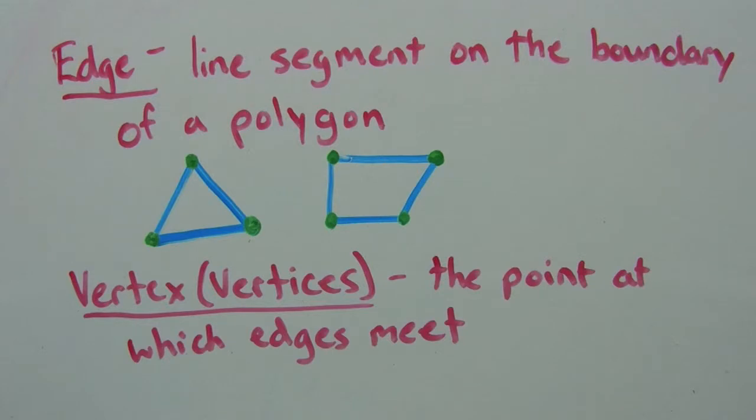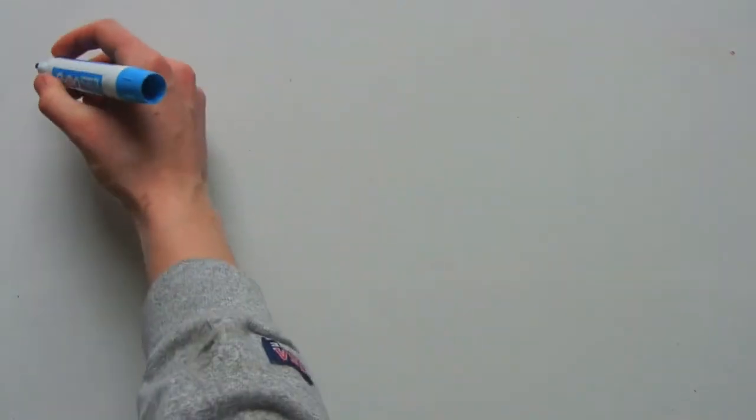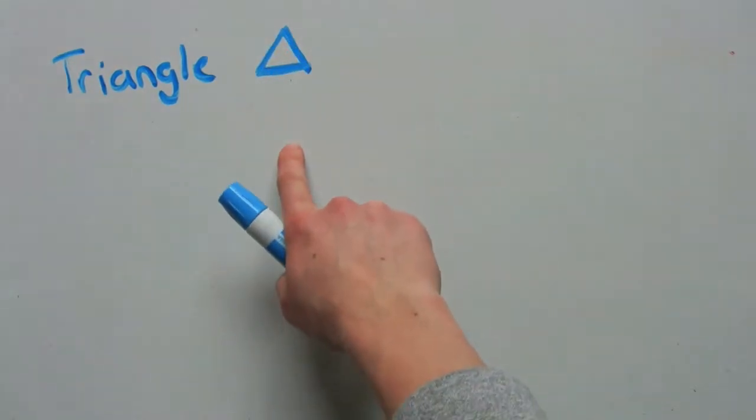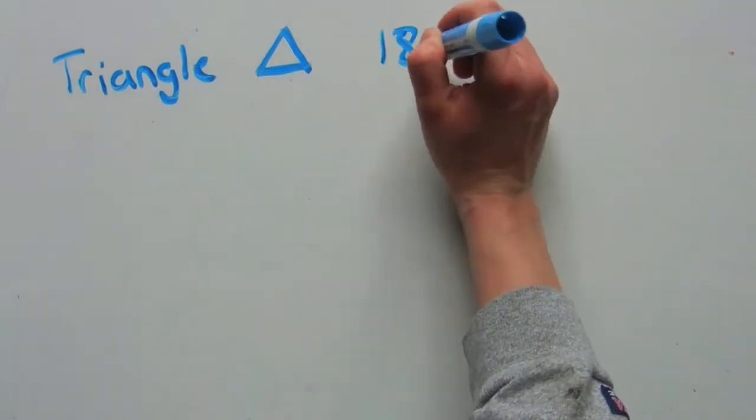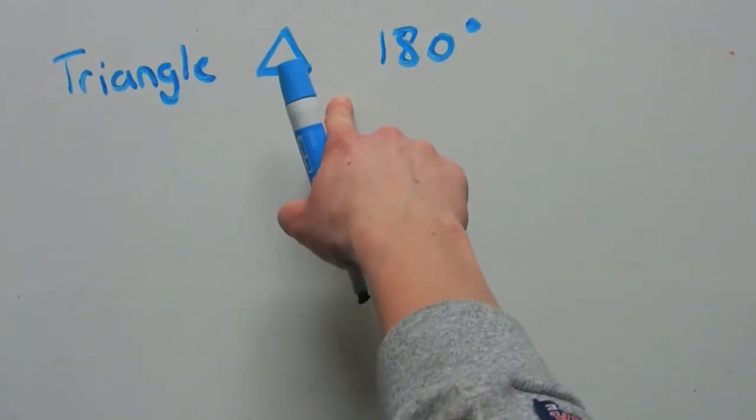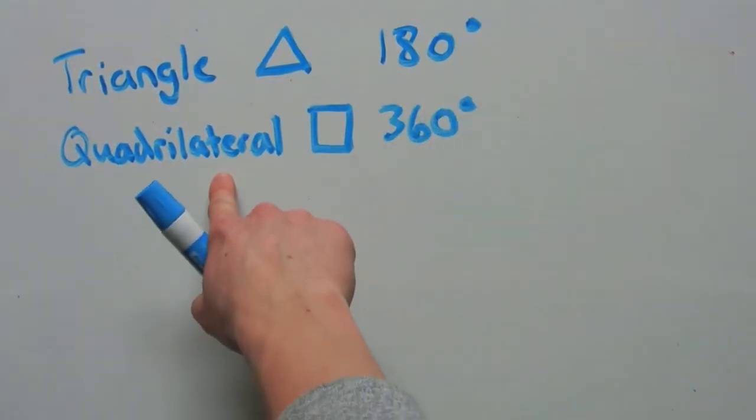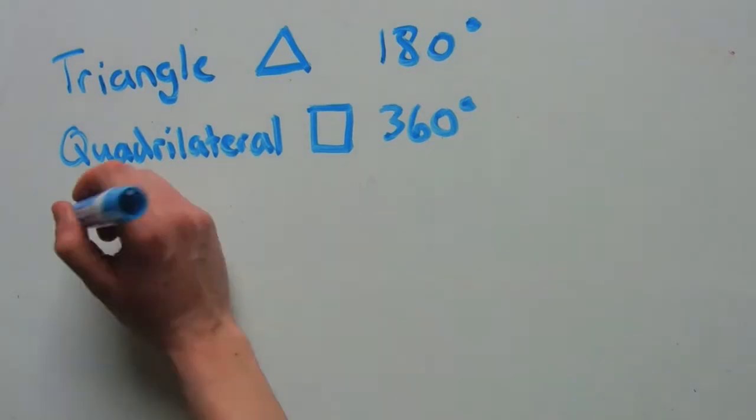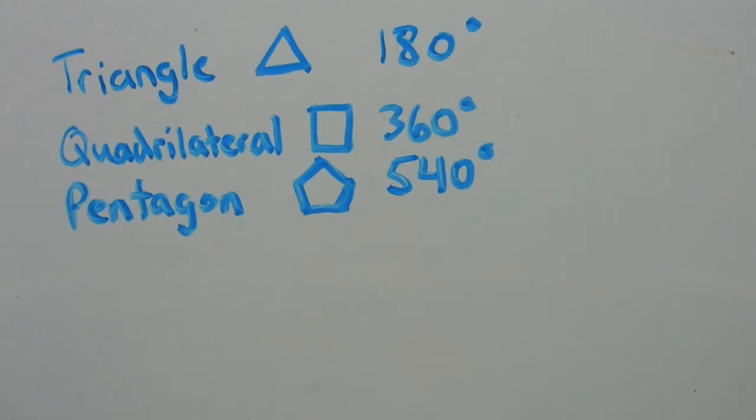Now let's go over angle measures for polygons with a different number of sides. First let's talk about a triangle. The interior angles add up to be 180 degrees. So the sum of all the interior angles of a triangle are 180 degrees. A quadrilateral will have four interior angles, and those interior angles will add up to 360 degrees. A pentagon is a five-sided figure, and those interior angles will add up to be 540 degrees.